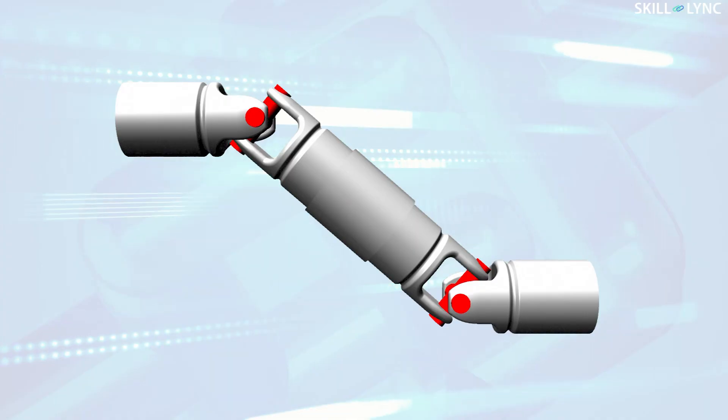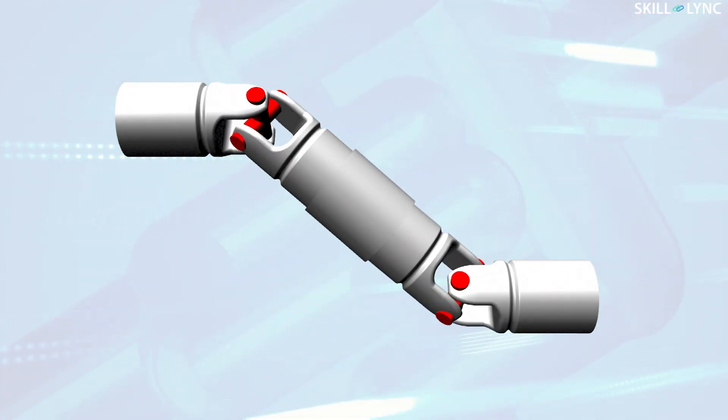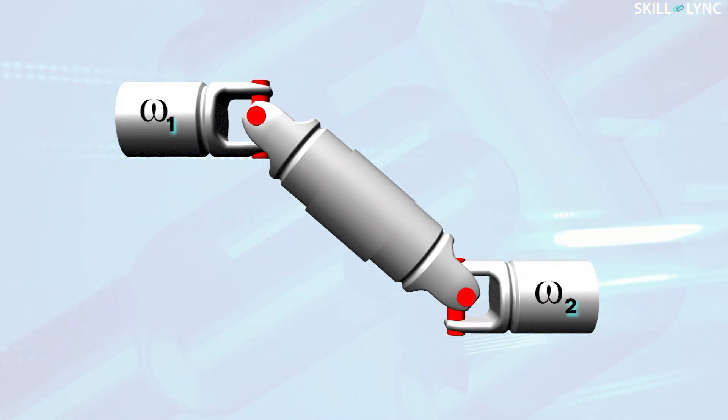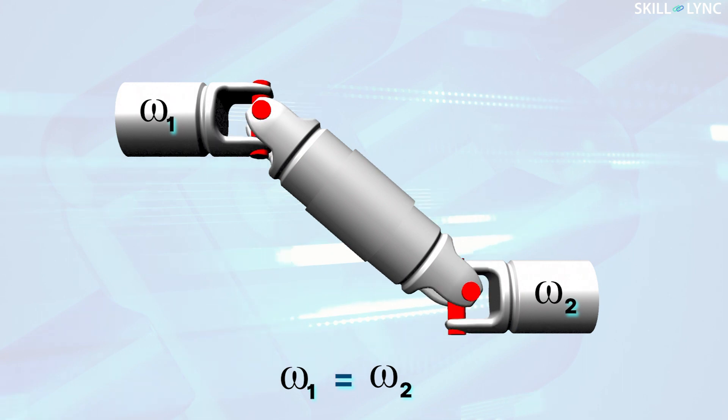In order to avoid this, two universal joints can be used. When two universal joints are placed on either side of an intermediate shaft, the variation in speed caused by the first joint will be compensated by the other, resulting in constant speed.